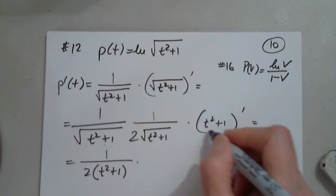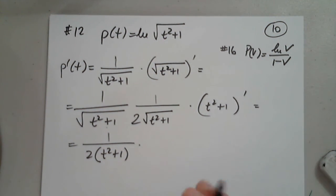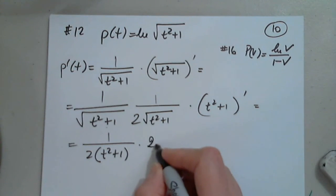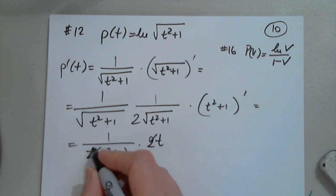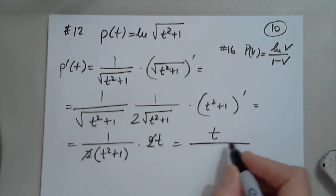Can anyone give us the derivative of t squared plus 1? It's 2t. So I simplify and that gives the final answer.